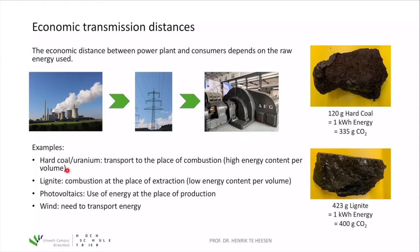For example, hard coal or uranium used in coal and nuclear power plants can be easily transported to the place of combustion, as they have a high energy density. From an economic point of view, it makes sense to produce coal or uranium, transport it to the power plant, and then use it to generate electricity. Lignite, on the other hand, must be combusted close to the mine or quarry, as its energy density is not high enough for long-distance transport.